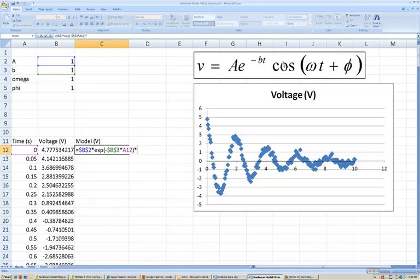Alright, that exponential is also multiplied by the cosine function. And inside that cosine function, I have the parameter omega, again, which requires an absolute reference, multiplied by the time, which does not require an absolute reference, plus this parameter phi, which again requires an absolute reference.